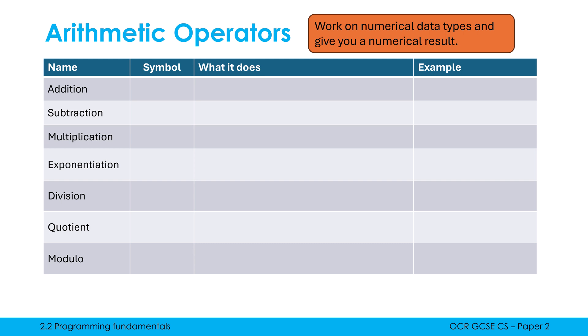So if you think back to our input, process, output model, the operator is doing the processing. It's processing the input to give us an output. And really most of these, well, all of these actually work on two inputs. You've got two inputs, they give you one output.